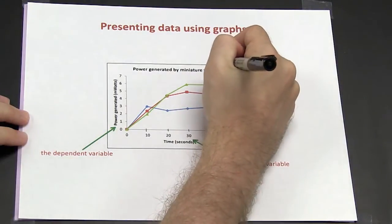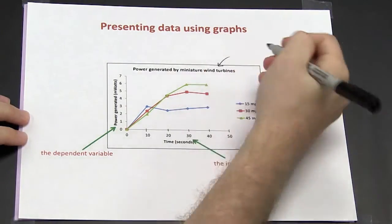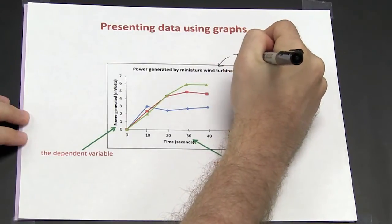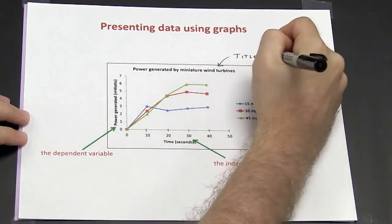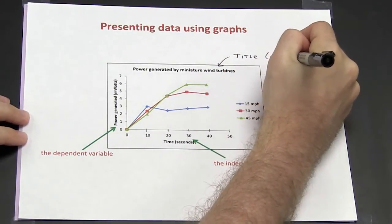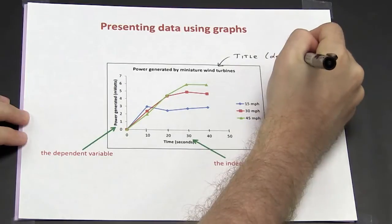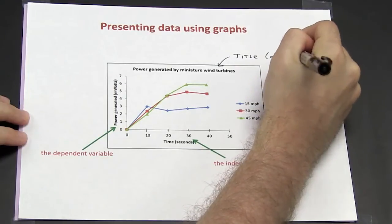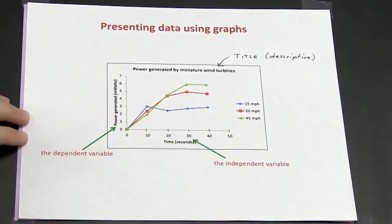The first is the fact that all graphs must have a title, and this title must be descriptive about what the experiment is about and what the data is showing you.